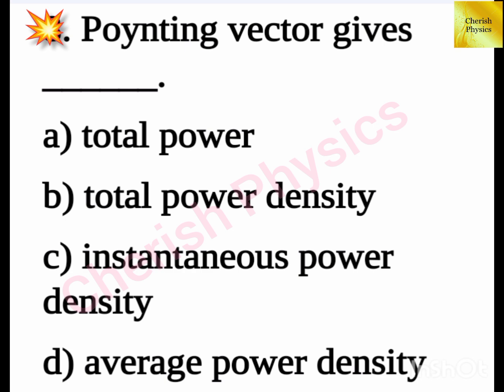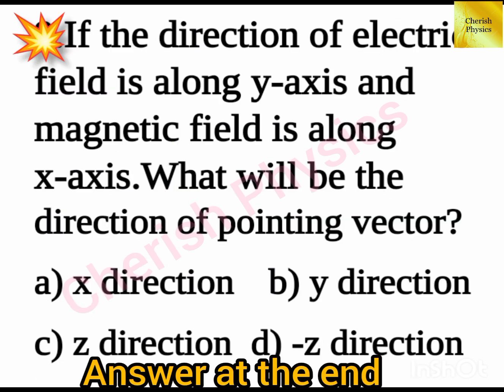The Poynting vector gives the dash. If the direction of electric field is along the y-axis and magnetic field is along the x-axis, what will be the direction of the Poynting vector?